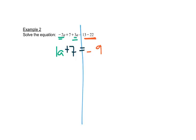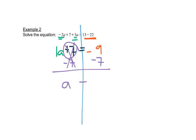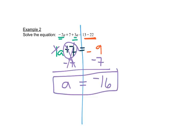Now that we've got each side as simple as possible, we're ready to start moving. This plus 7 we're going to move to the other side by subtracting 7. That leaves me with 1a, or just a — we don't usually write the 1 in front of a letter. And on the right, negative 9 minus 7 gives you negative 16. And that's our answer.